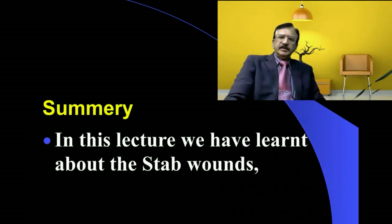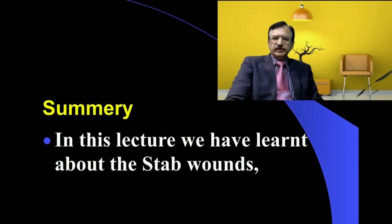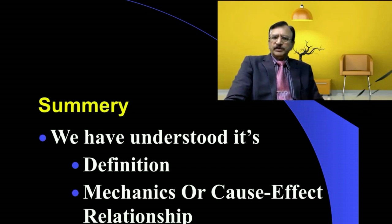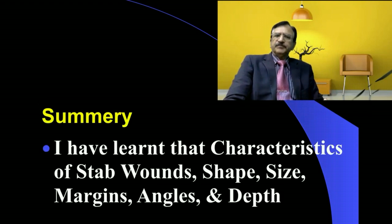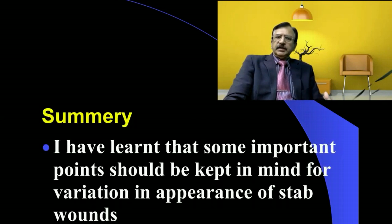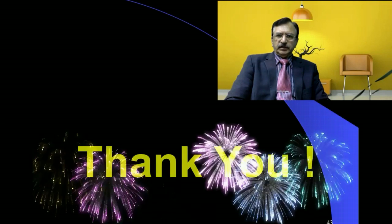In summary, this lecture covered stab wounds — the definition, cause and effect relationship, and various characteristics such as shape, size, margin, and angle, which will be further discussed in the next lecture. We have also understood the important points which should be kept in mind regarding variation in appearance of stab wounds. Thank you very much. This is all about today's lecture.